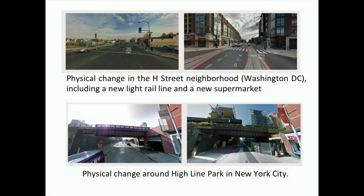Some salient examples: in the H Street neighborhood in Washington DC, a new streetcar was built and surrounded by new apartment buildings and a supermarket — the algorithm saw a large cluster of positive physical change around this new public transportation infrastructure. Another large cluster of positive change appeared around the High Line Park in New York City, a park built on top of an old abandoned railroad that spurred large growth around it. In other words, the algorithm is catching large changes driven by new public infrastructure and parks.